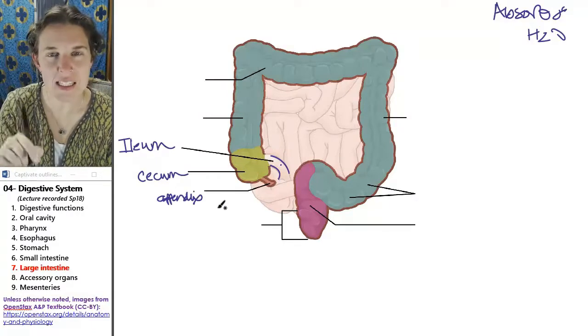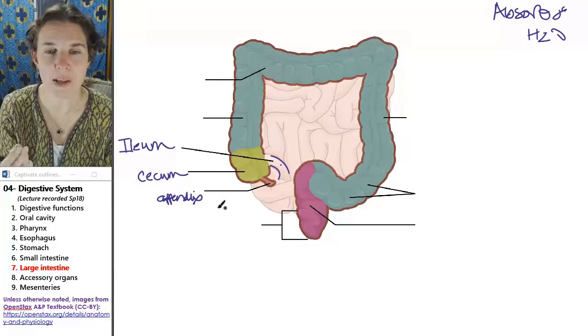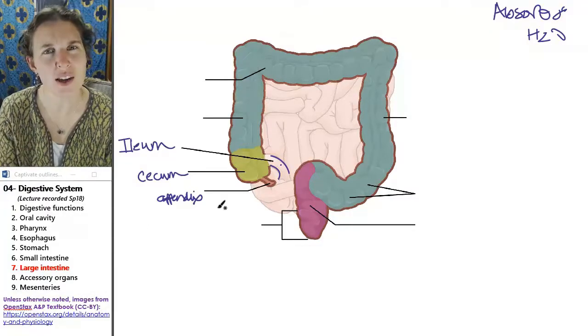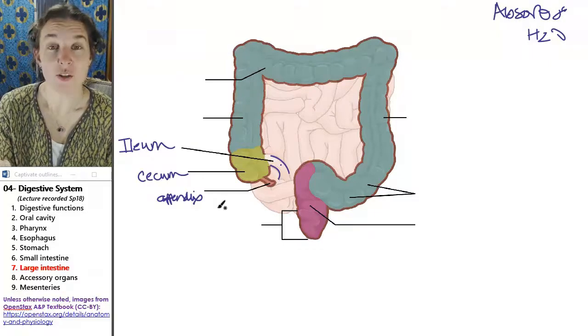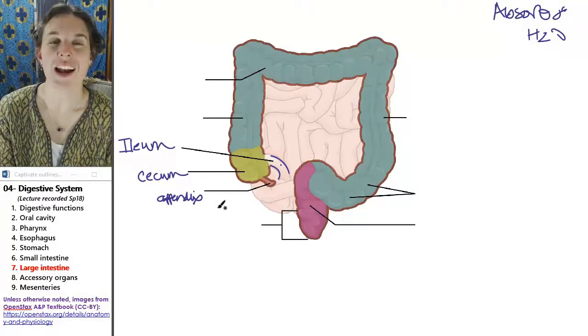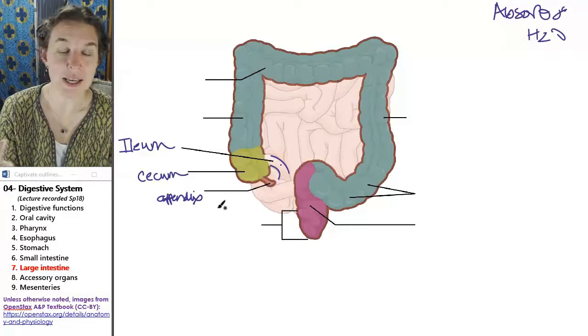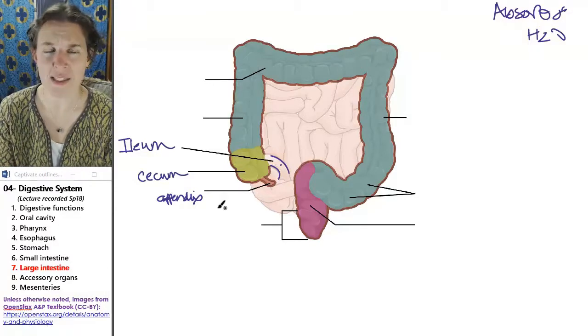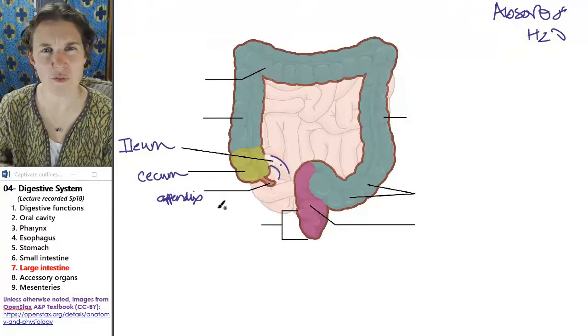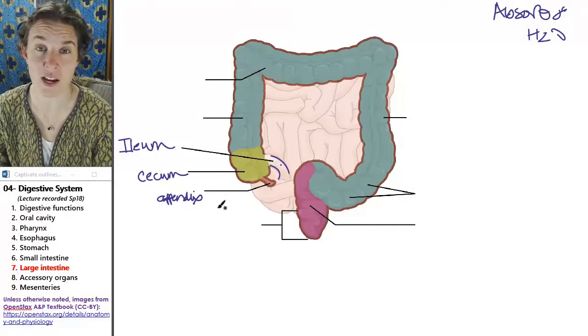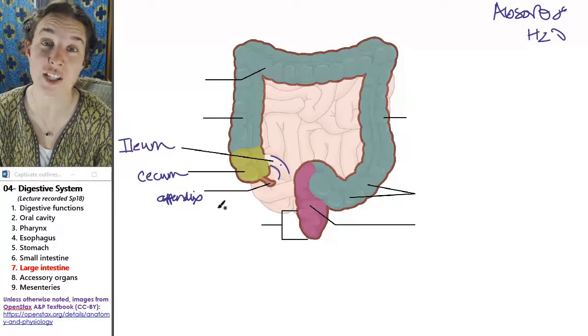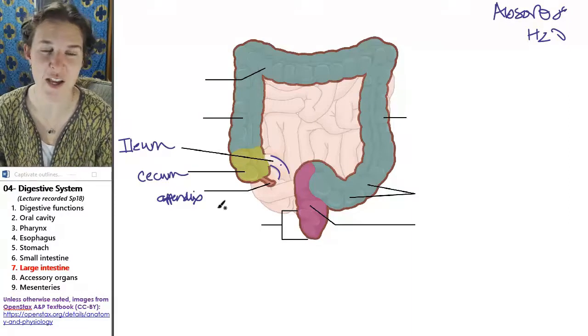And the appendix is this little worm-like pouch. There's all sorts of questions about what it actually does in humans. In critters like rabbits, they actually put food in there. They're like, here, let's store this for later, and there's lots of bacteria in there, and so they get some extra digestion done in the appendix.